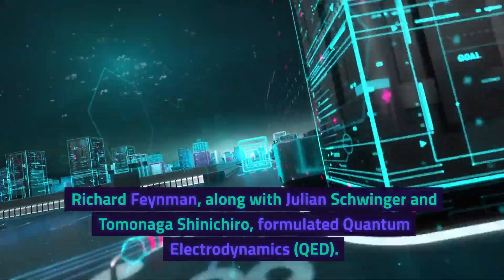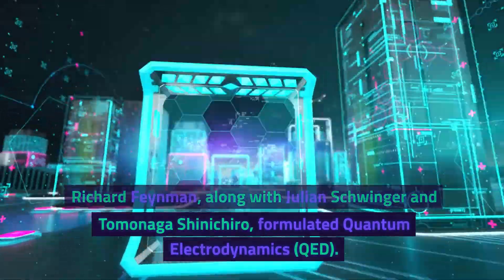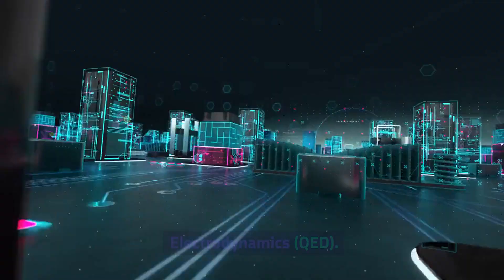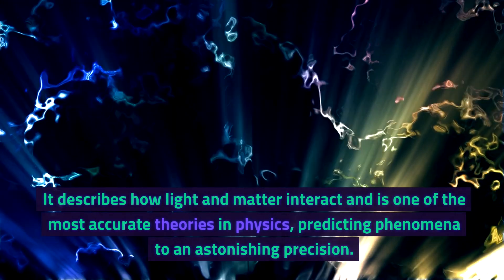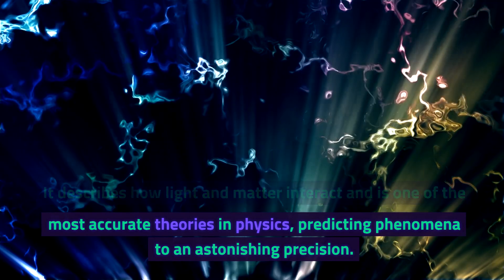Richard Feynman, along with Julian Schwinger and Tomonaga Shinichiro, formulated quantum electrodynamics, QED. It describes how light and matter interact and is one of the most accurate theories in physics, predicting phenomena to an astonishing precision.